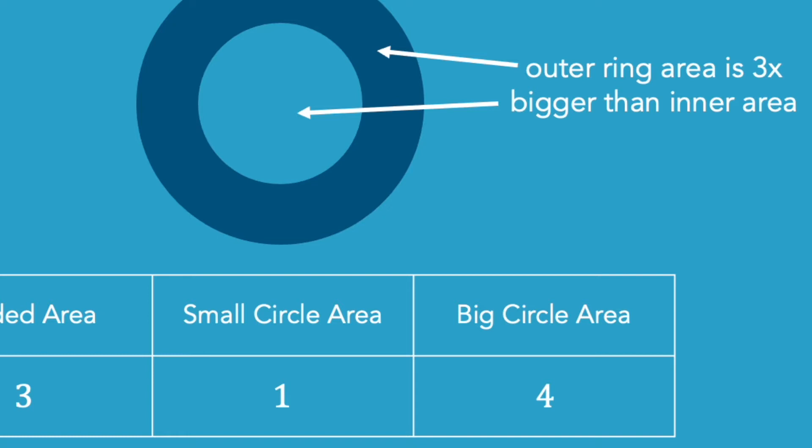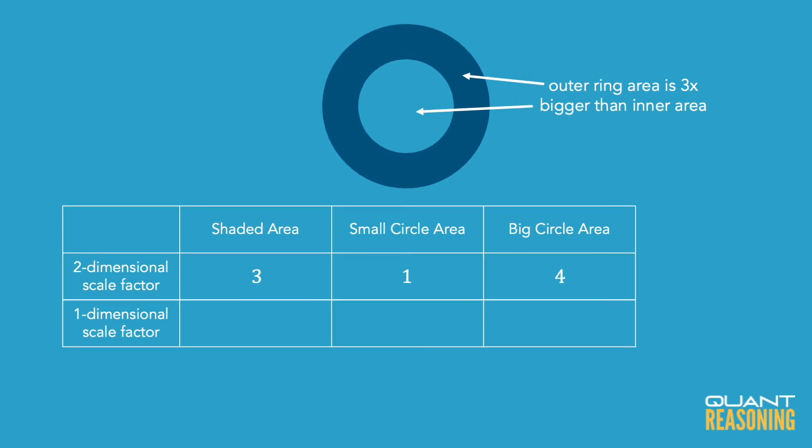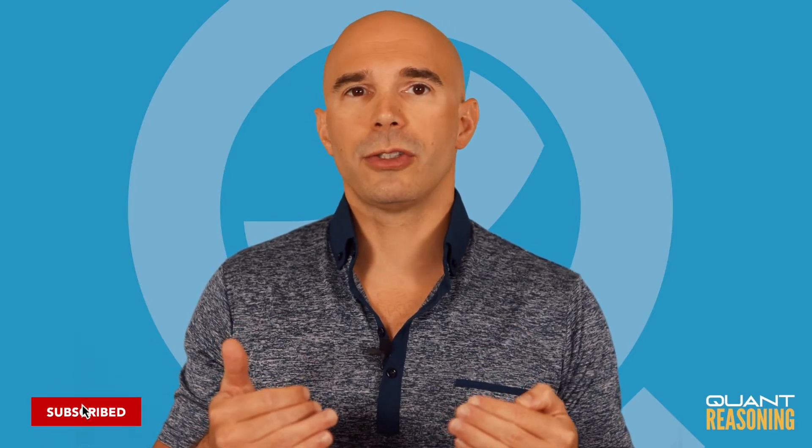But now just looking at the two columns on the right side, we have small circle to big circle is one to four. And this is a two-dimensional ratio because we're comparing areas. For the question itself, it looks like we're interested in a one-dimensional ratio because they're talking about lengths. A circumference is a length after all. So how do we go from a two-dimensional ratio to a one-dimensional ratio?